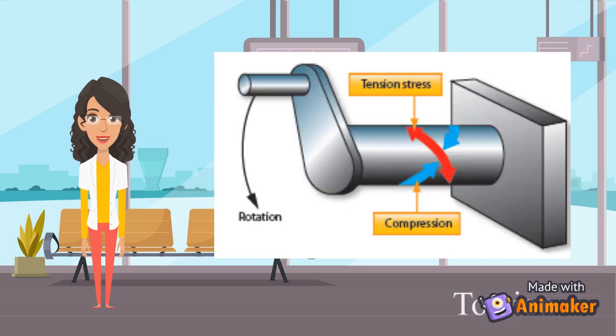Torsion is the force that is created by a twisting motion. A crankshaft experiences torsion applied by the movement of the pistons.